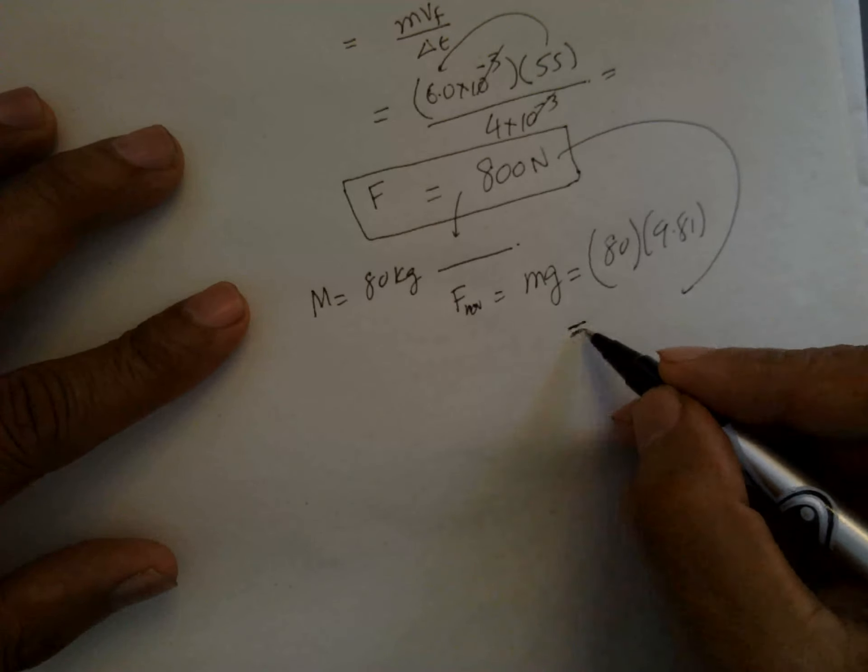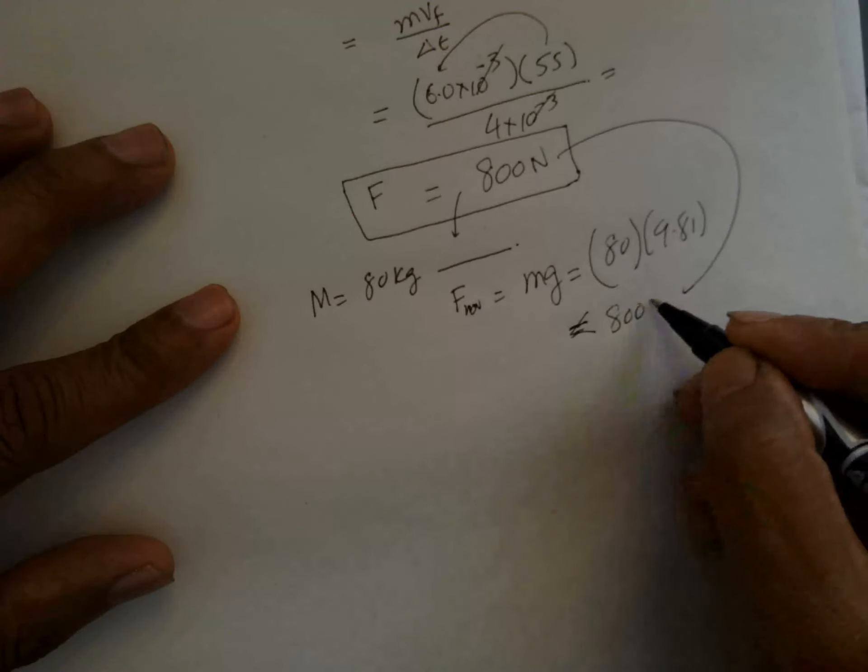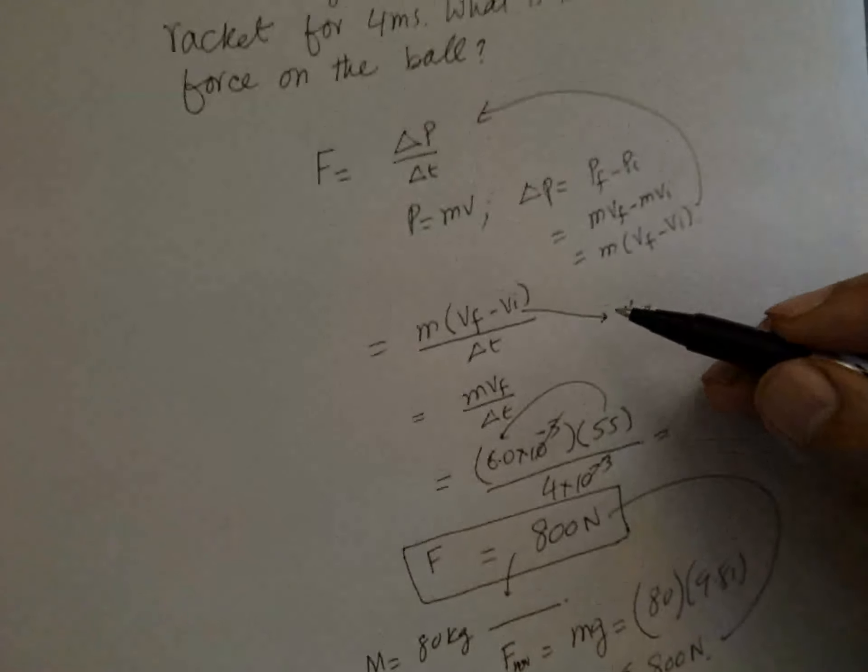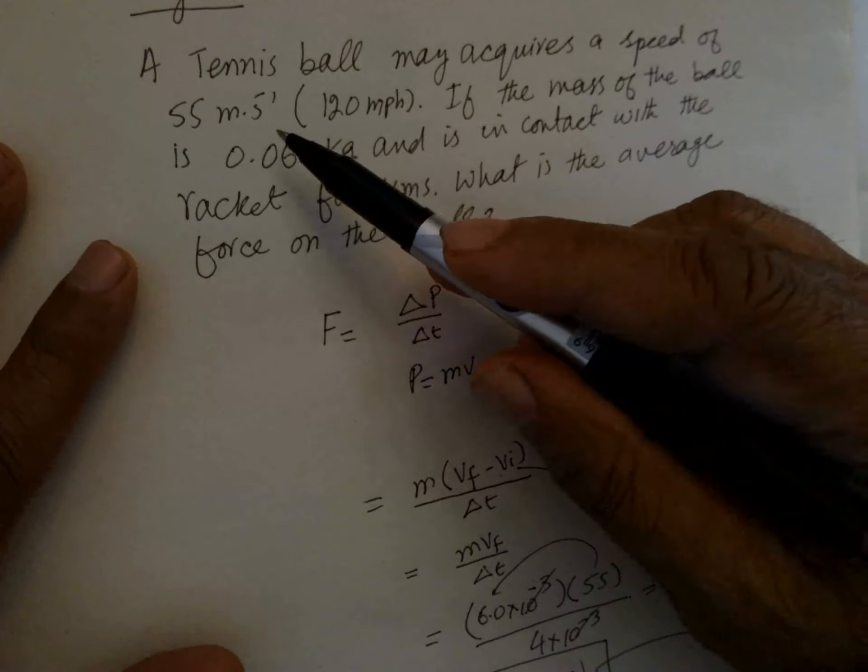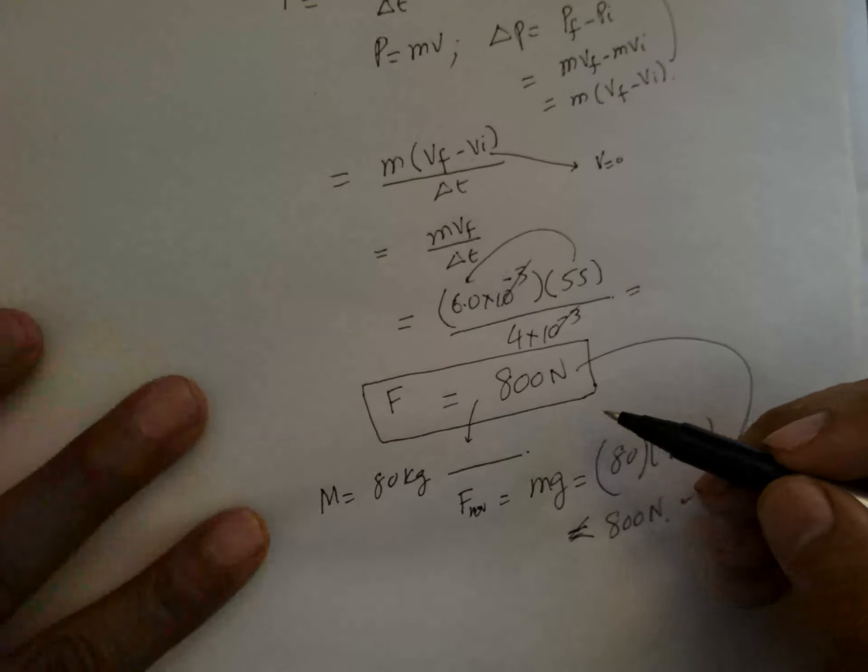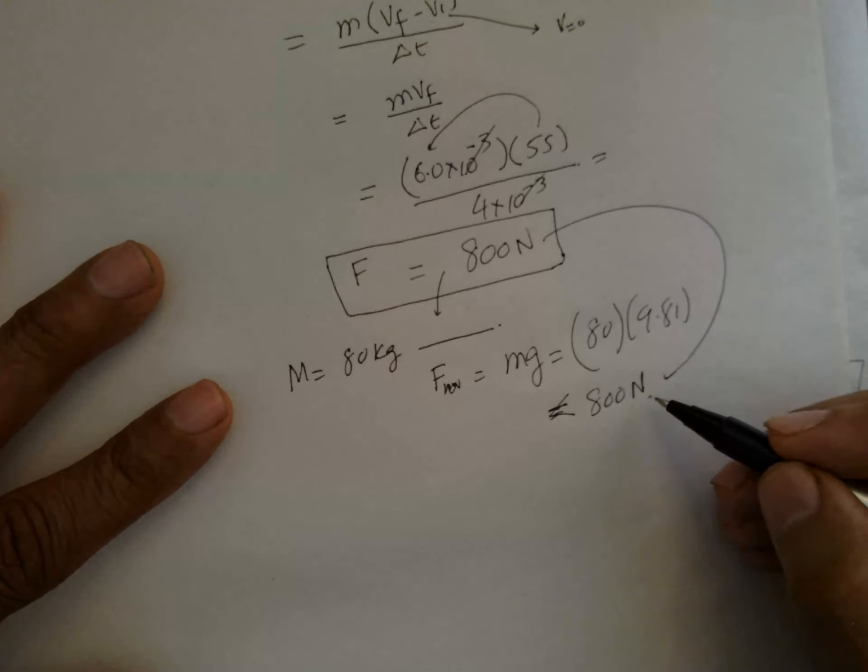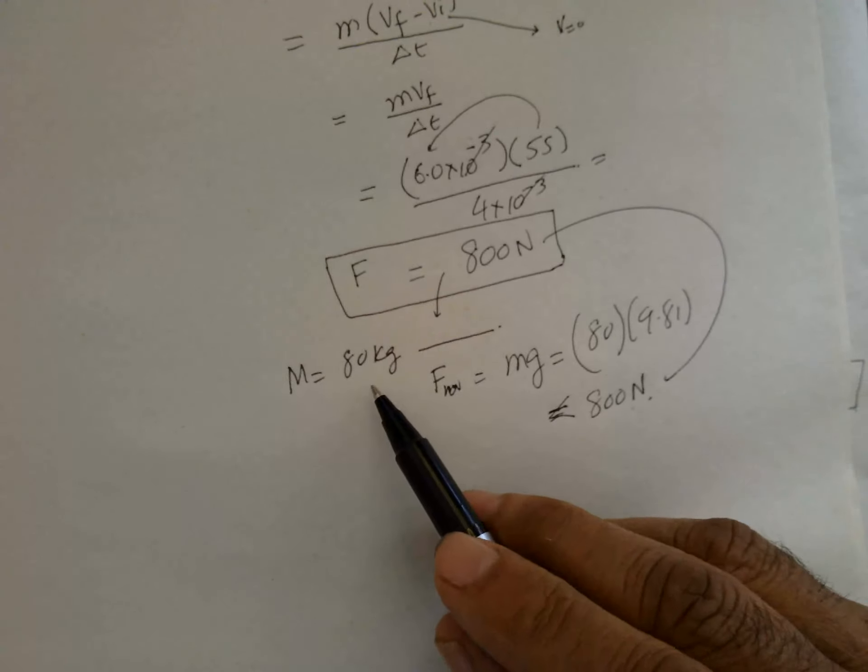...less than 800 newtons. So this is a very big force. The tennis ball may acquire a speed of 55 meters per second, and the force is 800 newtons, which is enough to pull a human of 80 kg.